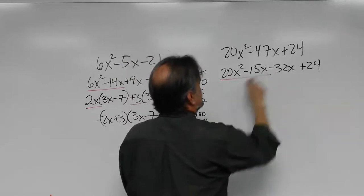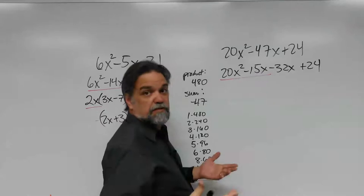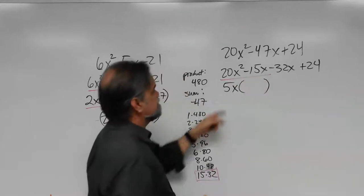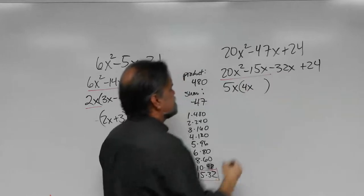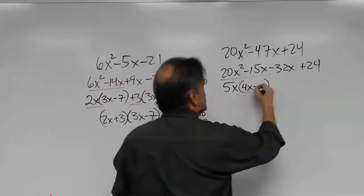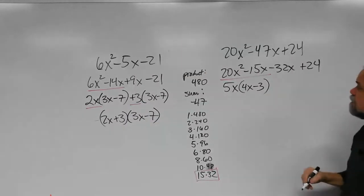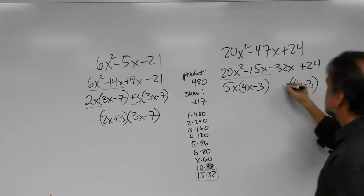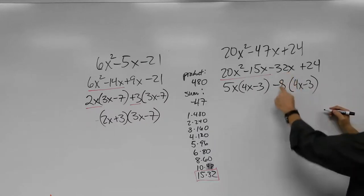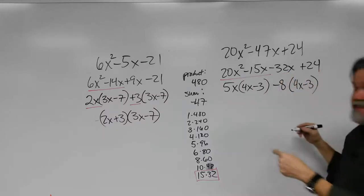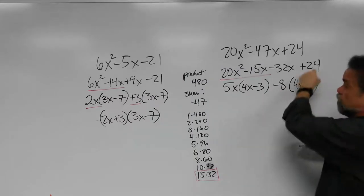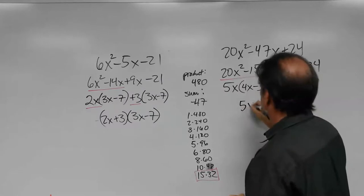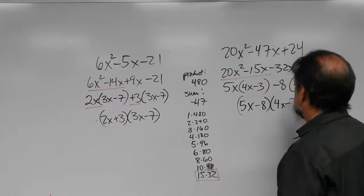Look at the first two terms: 20x² − 15x. Both 20 and 15 are multiples of 5, and both terms have x, so factor out 5x: 5x(4x − 3). Now what times (4x − 3) gives −32x + 24? That's negative 8: negative 8 times 4x is −32x and negative 8 times negative 3 is positive 24. So the factors are (5x − 8)(4x − 3).